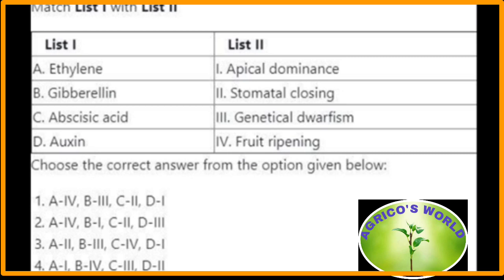Matching of list one with list two: ethylene is the fruit ripening hormone; gibberellin is related to genetic dwarfism; abscisic acid is related to stomatal closing and is a stress hormone; auxin is related to apical dominance. The right option is the first option.